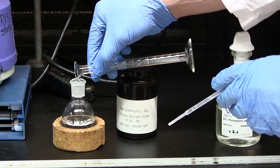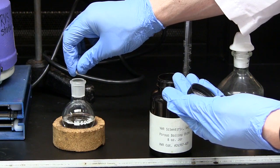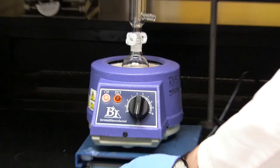Add 5 mls of concentrated phosphoric acid and boiling chips. Clamp the flask into a heating mantle.